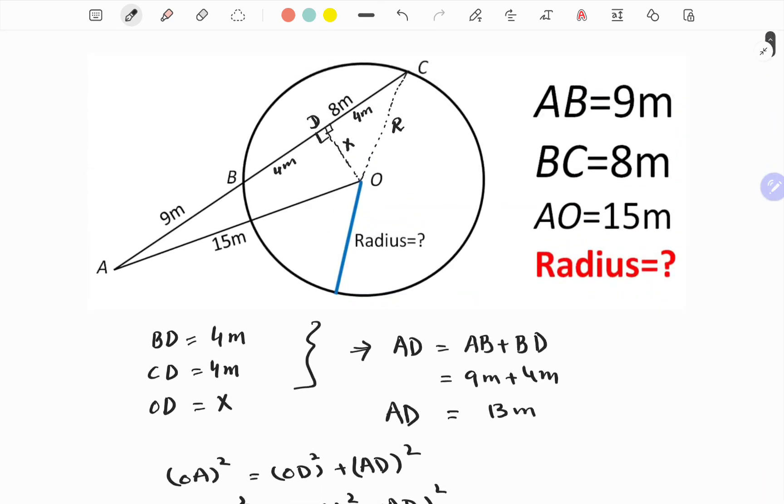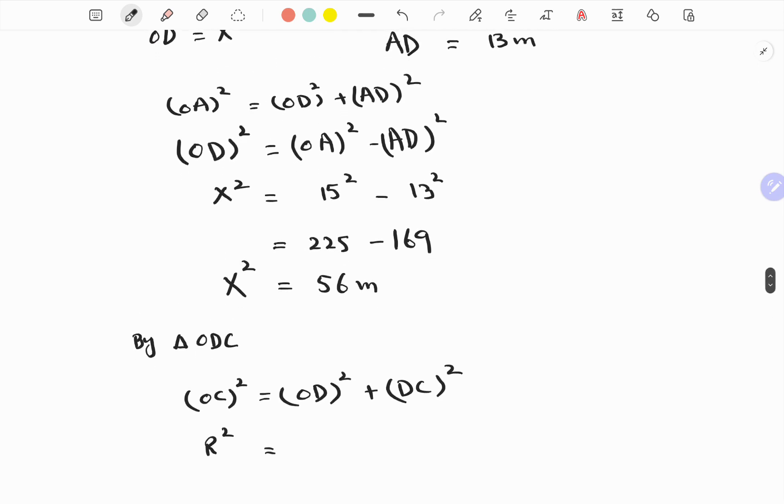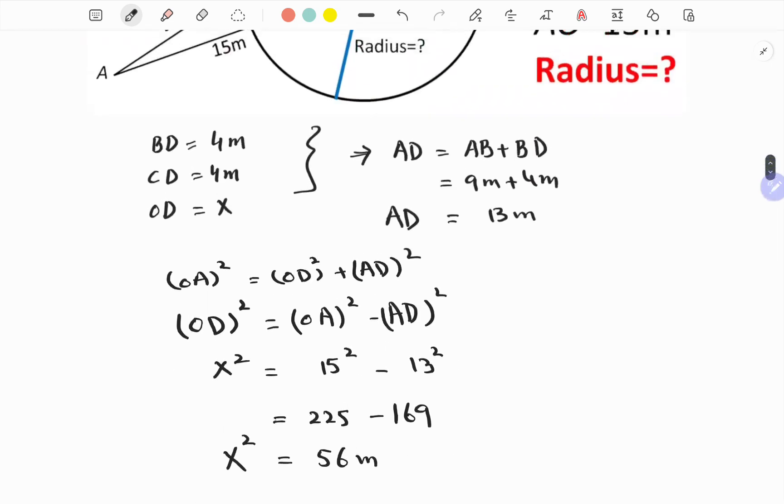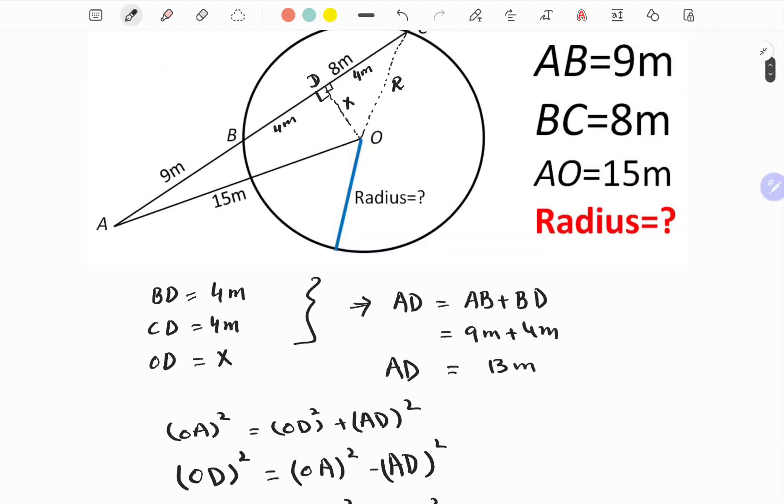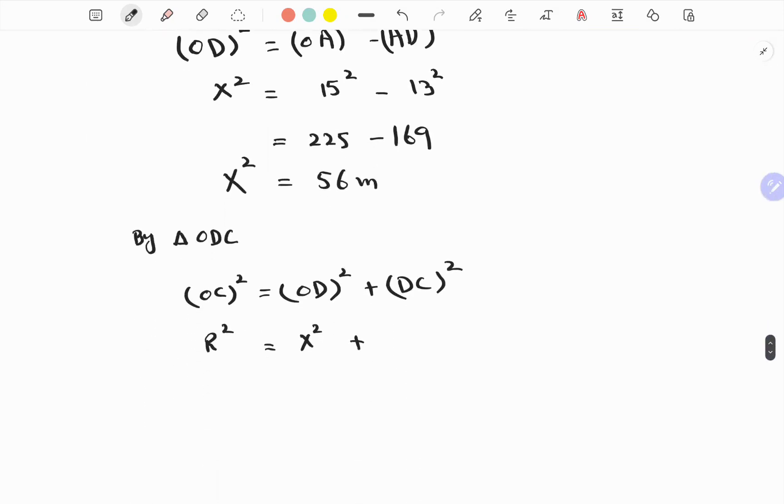OC is basically R, capital R, which is radius. OD is x, so this is x squared plus DC. DC is equal to 4 meters, so 4 squared.